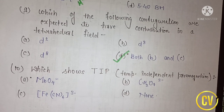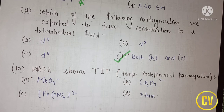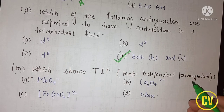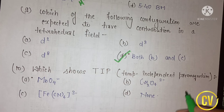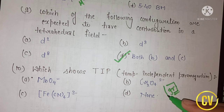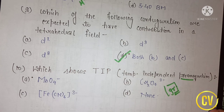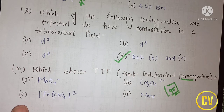The next question asks which compound shows TIP, that is temperature independent paramagnetism. This means the substance is diamagnetic — no unpaired electrons are present in the ground state. However, some substances deviate from pure diamagnetic behavior and show temperature independent paramagnetism. The correct option for question number 10 is option A, that is MnO₄⁻.